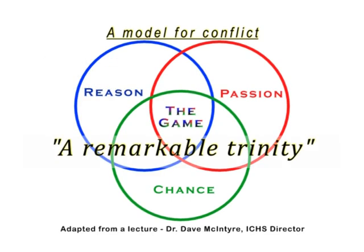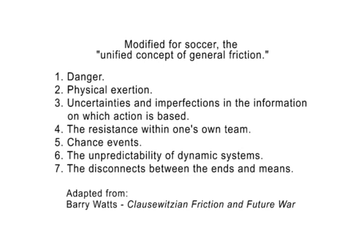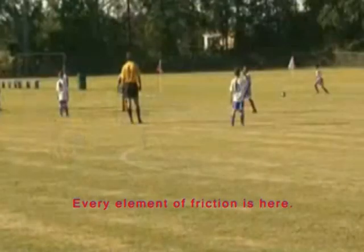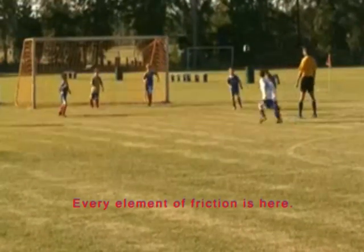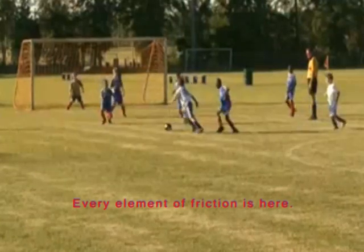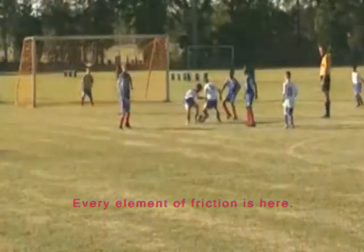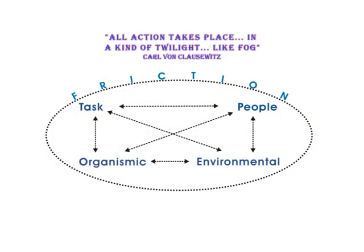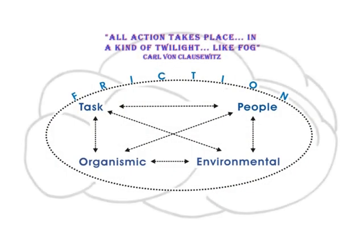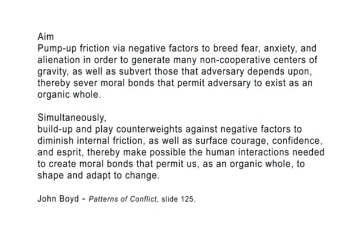If you accept that the remarkable trinity and the modified unified concept of general friction are inherent parts of competitive, team-based, and goal-driven activities — i.e., soccer — you'll have to include the concept of friction in your description and understanding of the game system. This leads us to a further modification of the dynamical systems model, one that includes friction. But friction is not a part of the model — it surrounds it. Every element — the environment, the task, and people — both creates its own friction and is constrained by it. Now that we've seen how friction is both unavoidable and influential, we'll start to focus on how to use it as a tool to get inside the opponent's OODA loop.